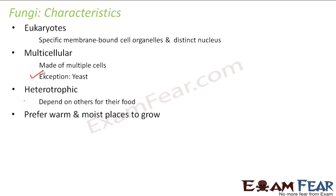Fungi prefer warm and moist places to grow. That is why when something gets rotten, moisture appears there and more fungi grow because they want warm and moist conditions. At the same time, in order to keep food fresh for longer, we keep it in the refrigerator. Because the temperature inside the refrigerator is very low, fungi cannot grow there and the food remains fresh. But if you keep the same food outside at higher temperatures, fungi might grow.